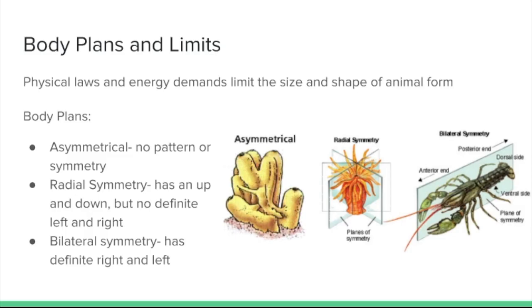We're going to begin just by discussing some of the limitations to animal body plans. Physical laws like gravity and energy demands—all organisms need ATP in order to sustain their life processes—these are going to limit the size and shape of an animal's form.